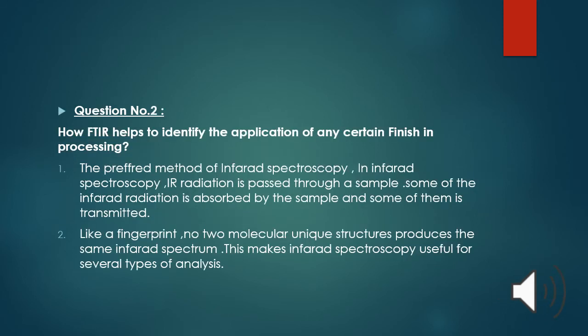The second question is how FTIR helps to identify the application of any certain finishing processing. The preferred method of infrared spectroscopy. In infrared spectroscopy, IR radiation is passed through a sample. Some of the infrared radiation is absorbed by the sample and some is transmitted. Like a fingerprint, no two molecular unique structures produce the same infrared spectrum. This makes infrared spectroscopy useful for several types of analyses.